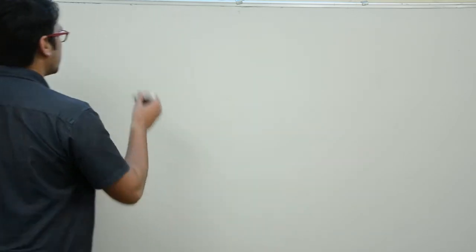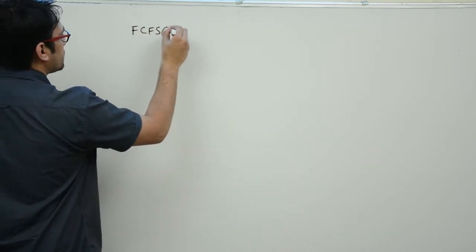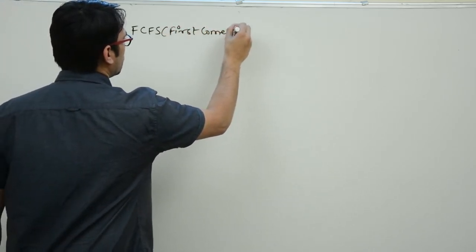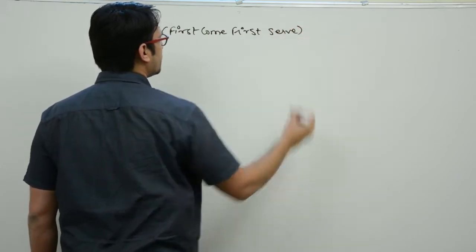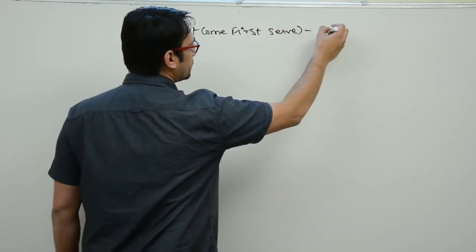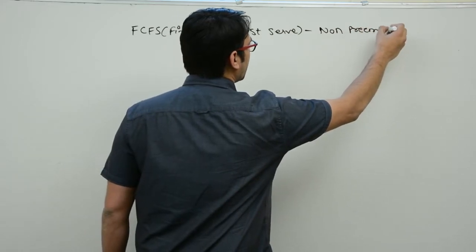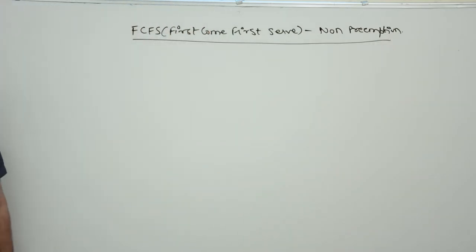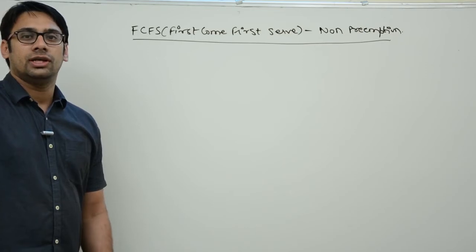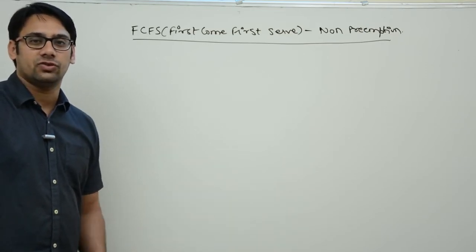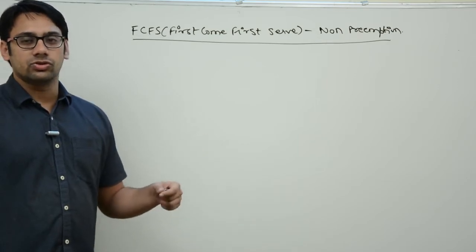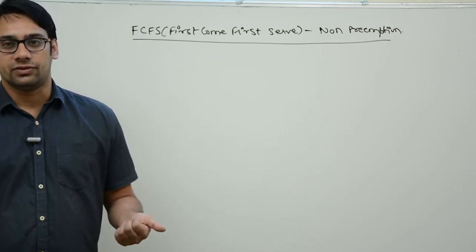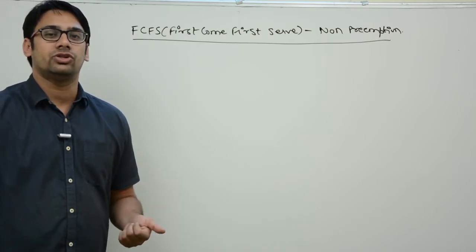Let us look at the first scheduling algorithm, which is First Come First Serve — FCFS. This algorithm works only in a non-preemptive environment; there is no preemption in FCFS. It is one of the easiest algorithms to understand and implement. To implement FCFS, we just have to maintain a queue that tracks the arrival time of processes, and we schedule them accordingly.